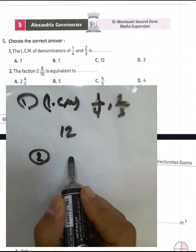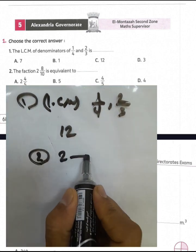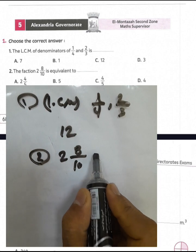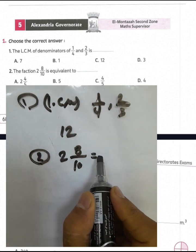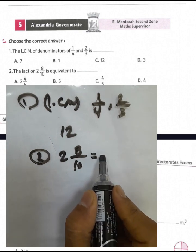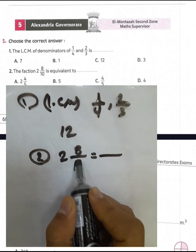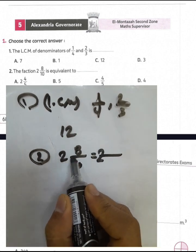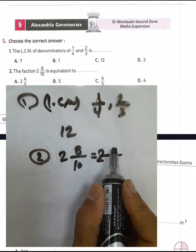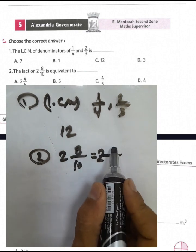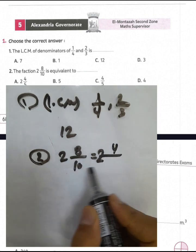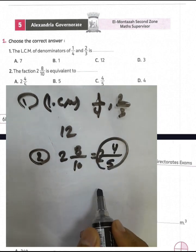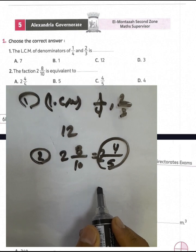Question number 2 is a fraction 2 and 8 over 10. It's equivalent to a simpler form — we can simplify it by dividing numerator and denominator by 2. 8 divided by 2 equals 4, and 10 divided by 2 equals 5. The result will be 2 and 4 over 5.